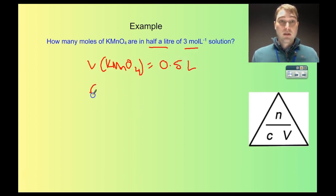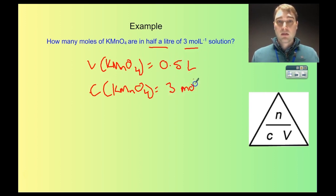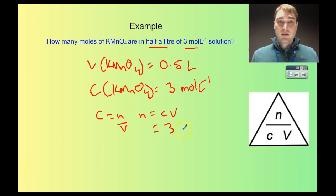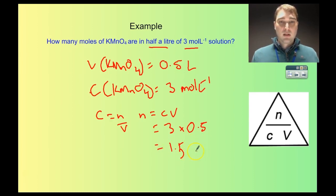My concentration of KMnO₄ is 3 moles per litre. Now I write my equation: C equals N on V, and I rearrange to N equals C times V. Substituting in: N equals 3 times 0.5 litres. So 3 times 0.5 gives us 1.5 moles.